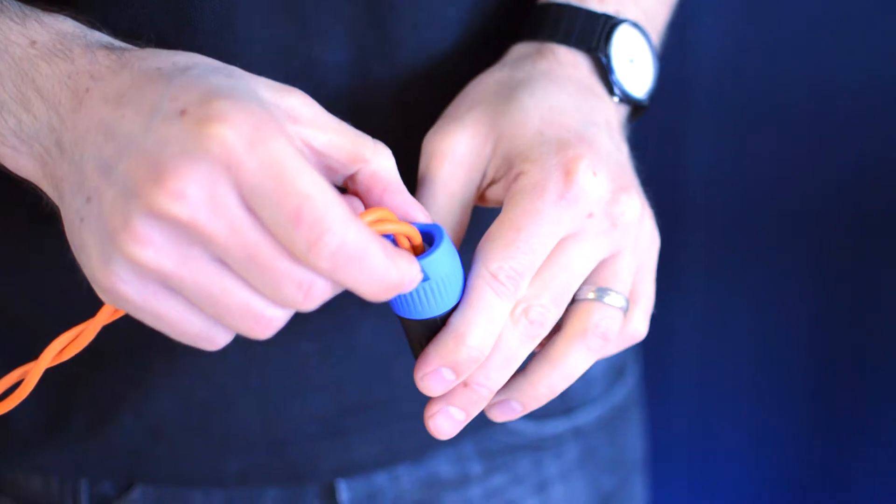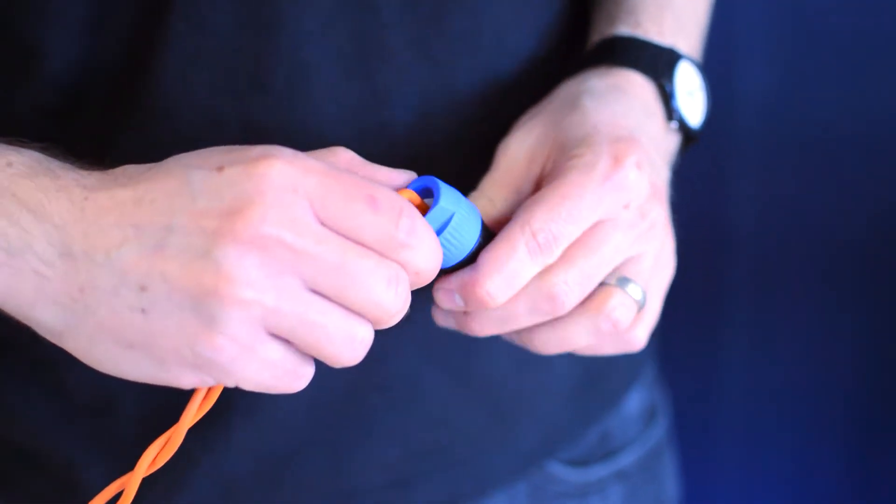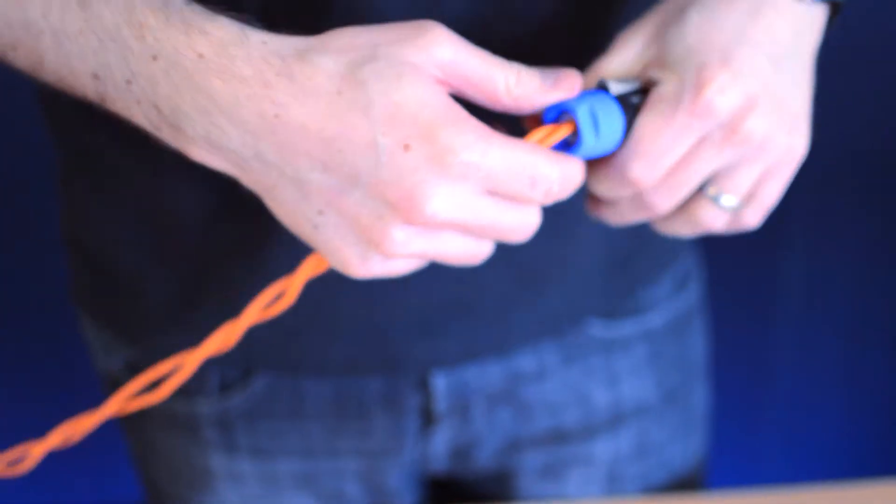You'll notice there's some flat parts there, so if you want to get it really tight, you can put a spanner on there. Just make sure it's really tight, and you'll see that the white strain relief's gripped onto the cable.